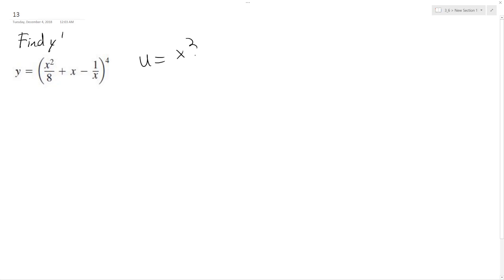So u is going to be equal to x squared over 8 plus x minus 1 over x. And then du is going to be equal to x over 4 plus 1 plus 1 over x squared.